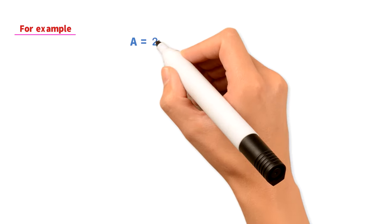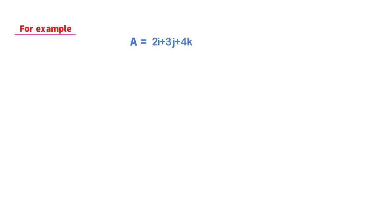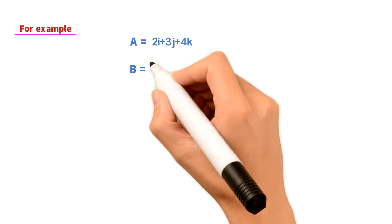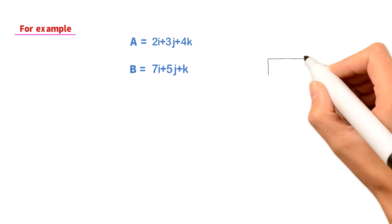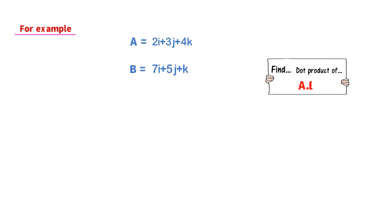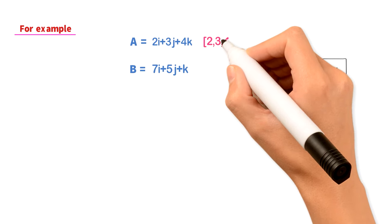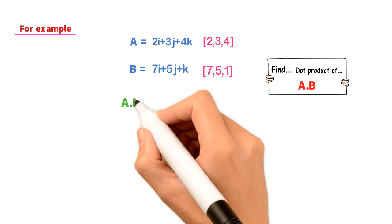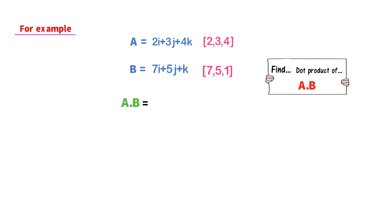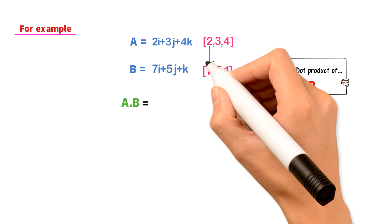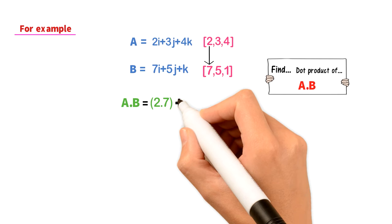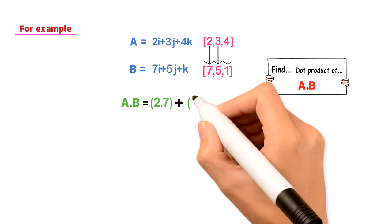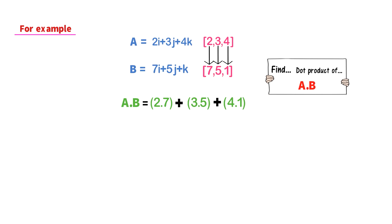For example, if I have vector A equal to 2i + 3j + 4k and vector B equal to 7i + 5j + k, and someone asks me to find the dot product of A and B: the components of A are 2, 3, 4 and the components of B are 7, 5, 1. The dot product equals 2×7 plus 3×5 plus 4×1.